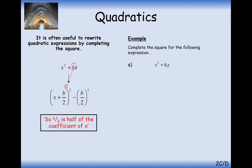So when you've got an 8 here, what we need to do is open up a set of brackets and write x plus 4, because half of 8 is 4, squared minus 4 squared. You half the 8 to make a 4, so it's x plus 4 squared, and then take away 4 squared.